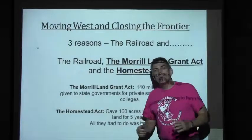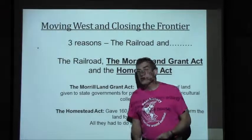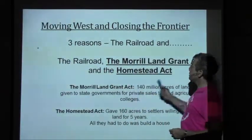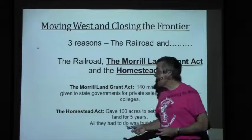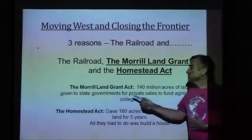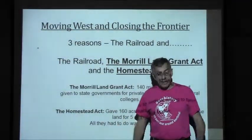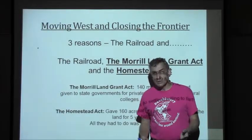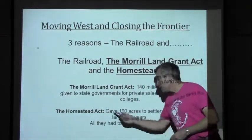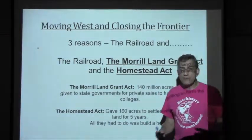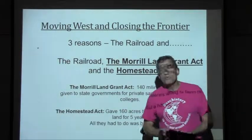While all this is occurring, people are heading west for all kinds of opportunities. They go west for three basic reasons: the railroad, the Morrill Land Grant Act, and the Homestead Act. The railroad brings them there; the land grant and Homestead Act gave them land. The Morrill Land Grant Act gave 140 million acres to state governments for private sale to fund agricultural colleges. The Homestead Act gave 160 acres to settlers willing to live on the land and farm it for five years. These three things really moved people west in huge numbers.